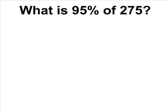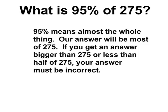In this lesson, we are going to demonstrate how to find 95% of 275. Note that 95% is almost all of 100, which means we are looking for a number which is almost all of 275.